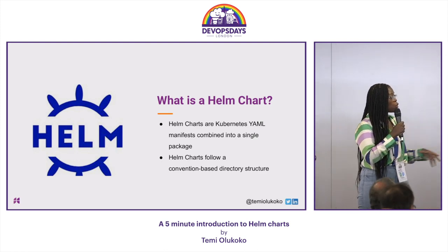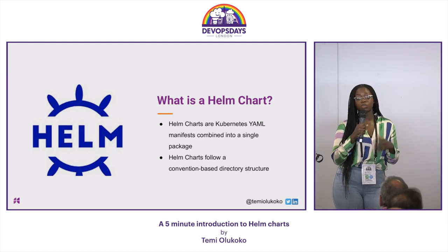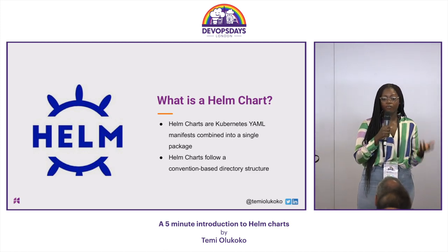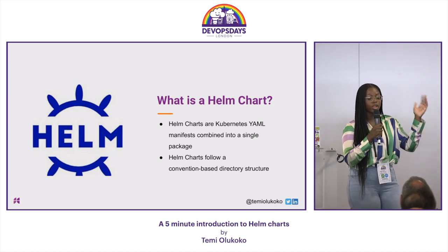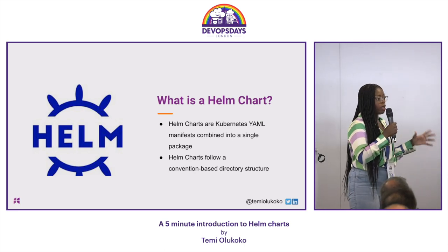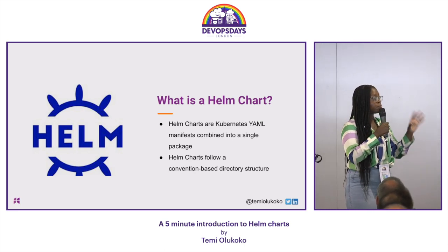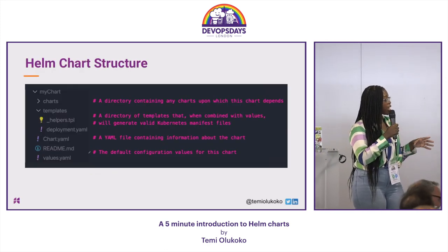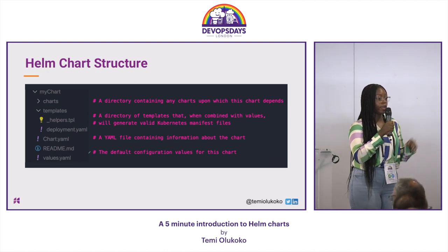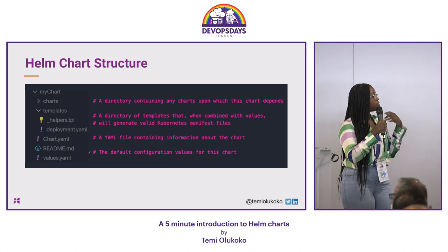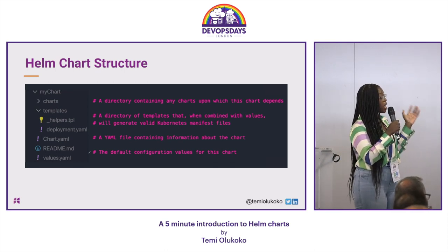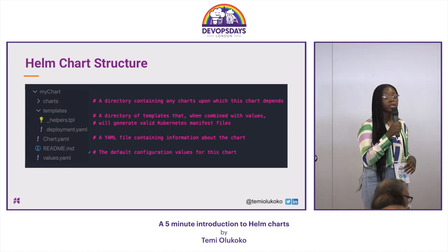We can describe Helm Charts as Kubernetes YAML manifests that are combined into a single package that can be advertised to our clusters. Helm Charts are file-based, so they follow a convention-based directory structure. With our Helm Chart, we have four main parts: the chart YAML file, a values YAML, a Charts subdirectory which contains any chart dependencies, and a templates subdirectory.